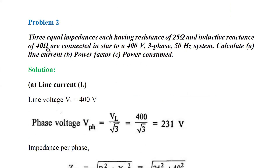Good morning. Today we are going to see a problem on resistance and inductive reactance connected in star connection. Three equal impedances, each having a resistance of 25 ohms and inductive reactance of 40 ohms, are connected in star and connected to a 400 volt, three phase, 50 hertz system.